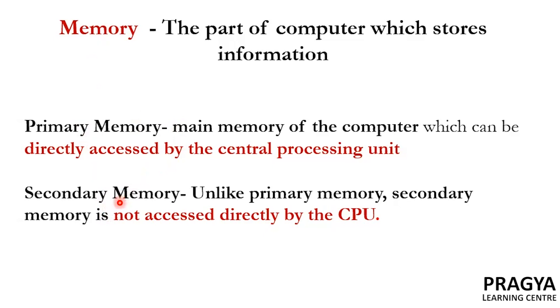Unlike primary memory, secondary memory cannot be directly accessed by the processor. Now, we will see which are the types of primary memory and which are the types of secondary memory.